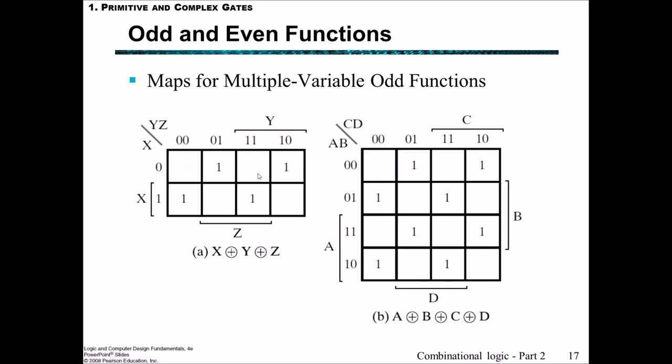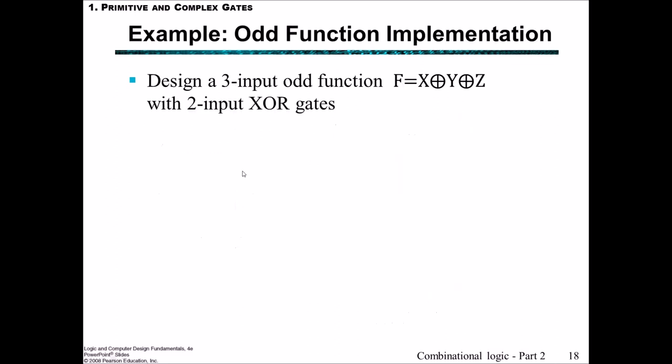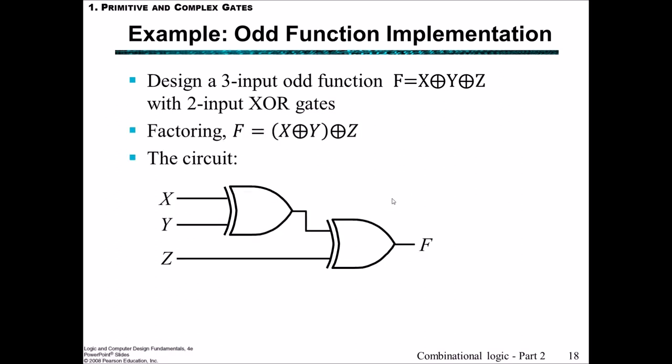Let's do an example of an odd function implementation. We've got to design a 3-input odd function. We have inputs of X, Y, and Z, and we want to use 2-input XOR gates. We recognize that the function could also be broken up in this way. And then we have now 2-input XOR gates. We could say X and Y going into an XOR gate, which is going into another XOR gate with Z. So there it is drawn much more elegantly.